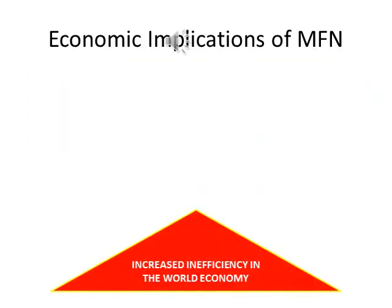Regarding the economic implications of MFN — increased efficiency in the world economy: MFN treatment makes it possible for countries to import from the most efficient supplier in accordance with the principle of comparative advantage. For example, if country B can supply product X at a lower price than country C, country A can increase its economic efficiency by importing it from country B. If, however, country A applies higher tariff rates to product X from country B than to product X from country C, country A may be forced to import product X from country C, even though country C is not as efficient a supplier. This distorts trade and reduces the welfare of country A and the economic efficiency of the entire world.